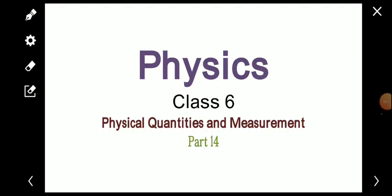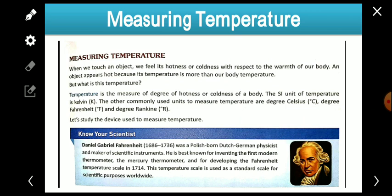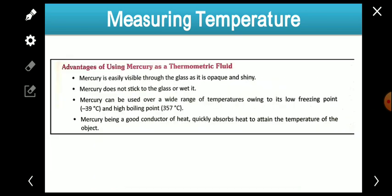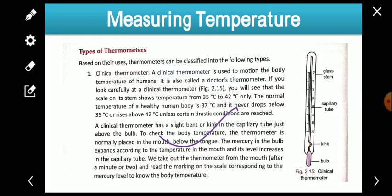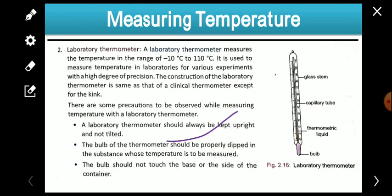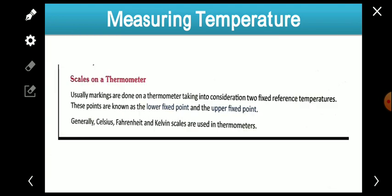Hello students, we are going to continue the same chapter, Physical Quantity and Measurement. This is Part 14 of the chapter and it is the last session. In the last session we talked about measuring temperature, the thermometer, and advantages of using mercury. Today we will continue with scales on a thermometer and then talk about types of thermometers — clinical thermometer and laboratory thermometer.